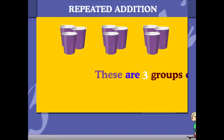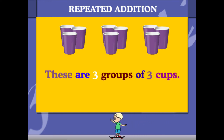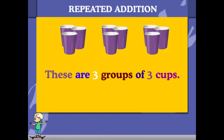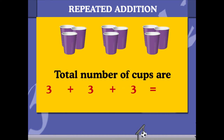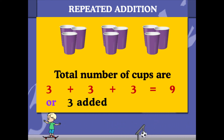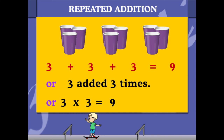Repeated addition: here are three groups of three paper cups. If you add, it is three plus three plus three, equal to nine. This means three is added three times. This is also shown as three into three, equal to nine. The cross in between is called the multiplication sign.